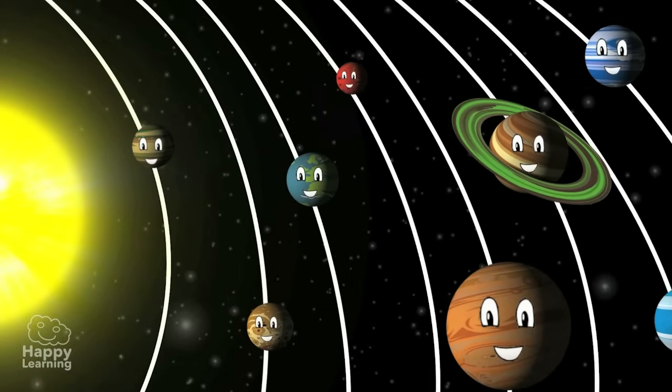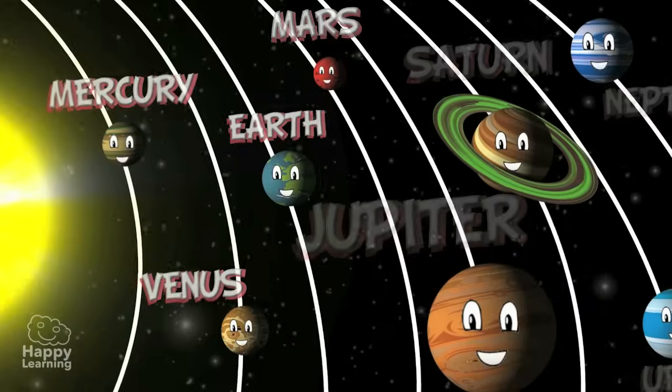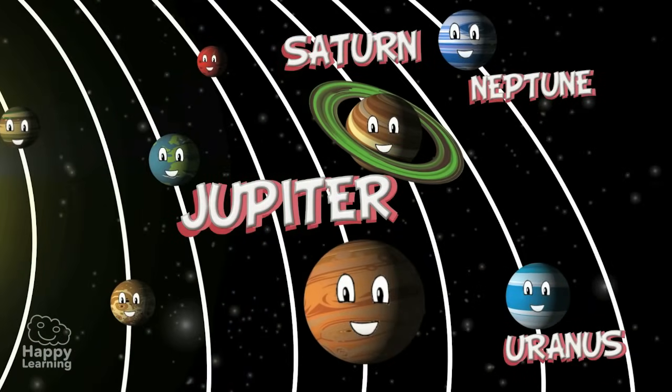As you can see, Mercury, Venus, Earth and Mars are closer to the Sun and also smaller than Jupiter, Saturn, Uranus and Neptune.